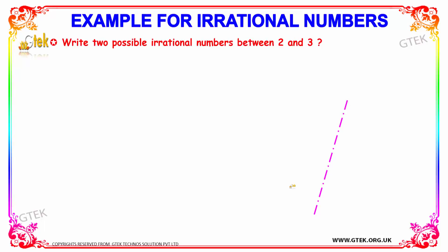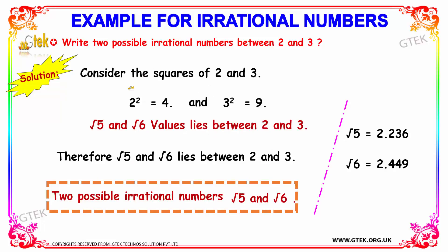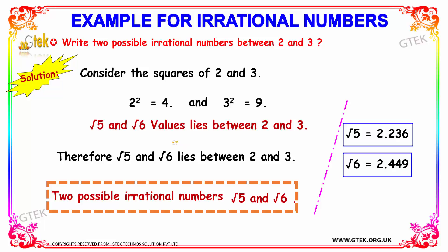An example question: write two possible irrational numbers between 2 and 3. We consider the squares of 2 and 3 — that is 4 and 9. The values of root 5 and root 6 are 2.236 and 2.449 respectively. Both lie between 2 and 3, so the two possible irrational numbers between 2 and 3 are root 5 and root 6.